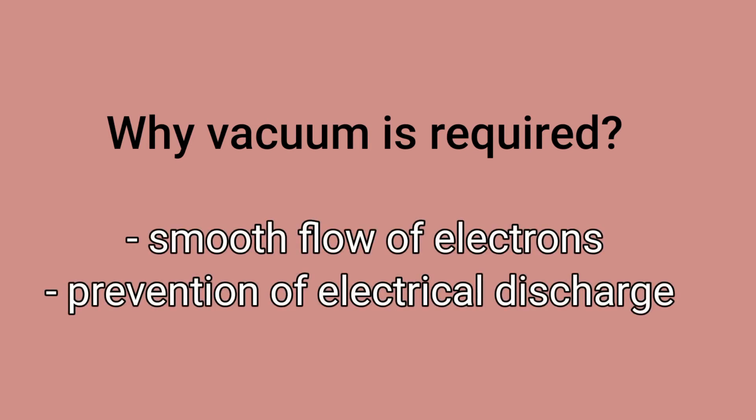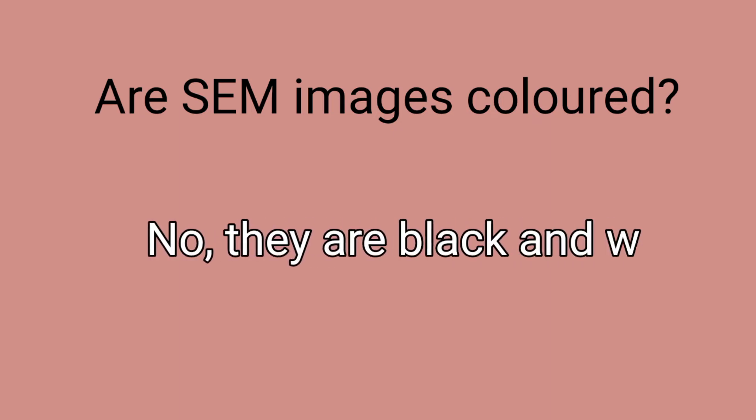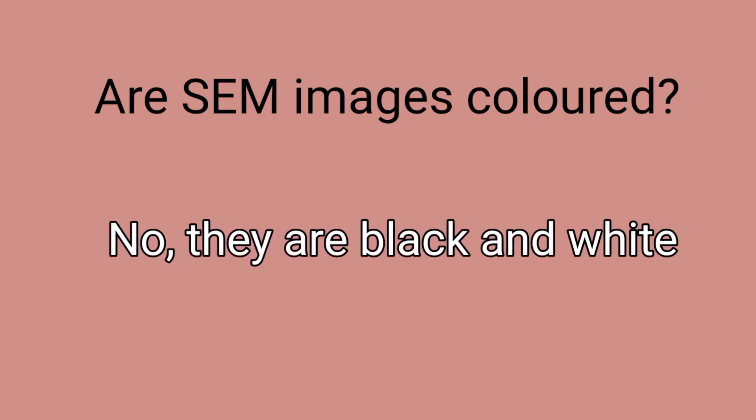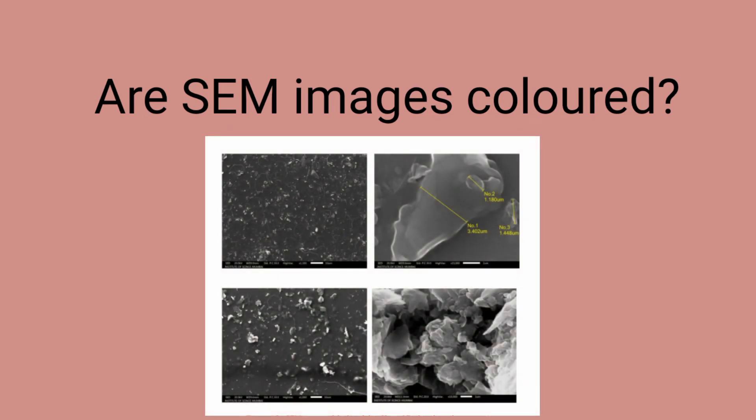Why is vacuum required in SEM? It is required for smooth flow of electrons in one direction and to prevent electric discharge. Are SEM images colored? As far as we have seen, they are all black and white. The signal number is usually represented as a grayscale value, so black and white images are produced in SEM.